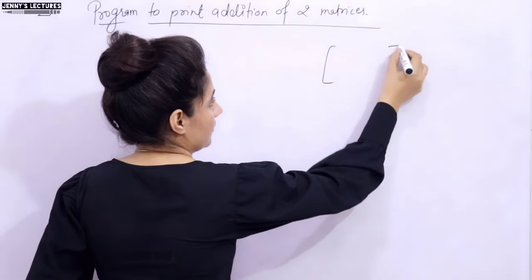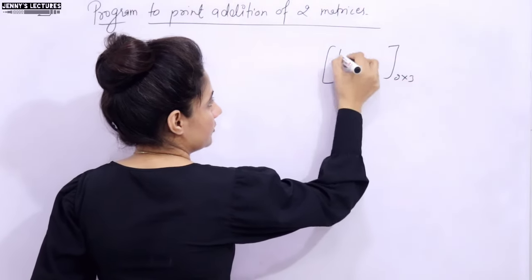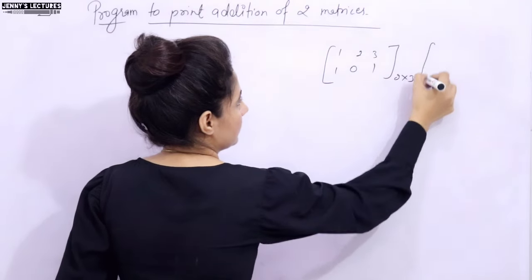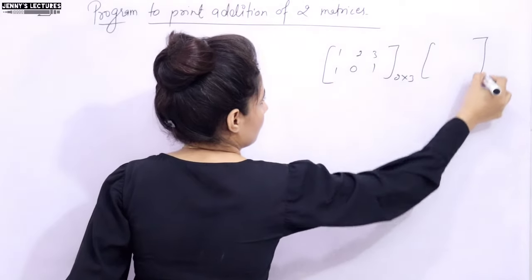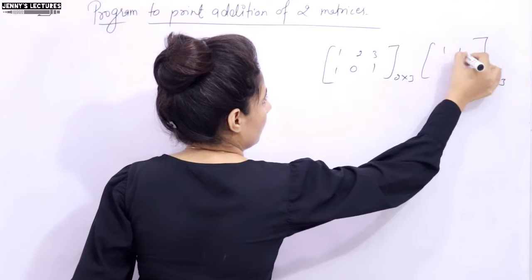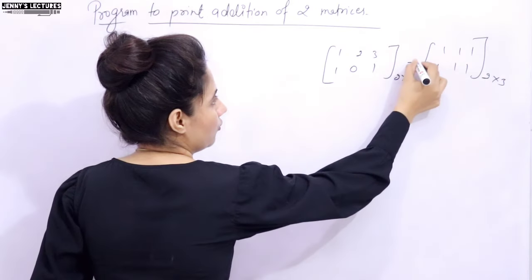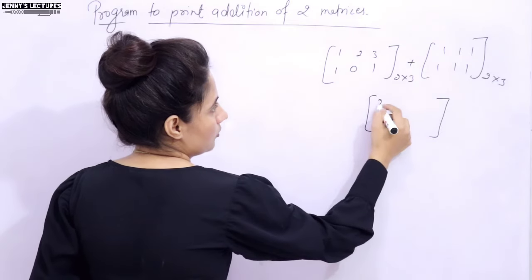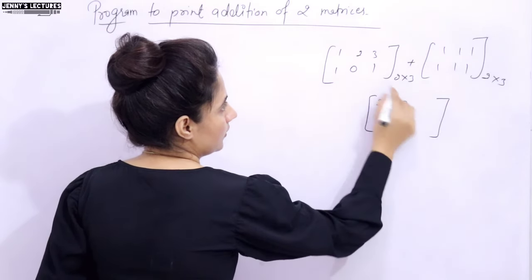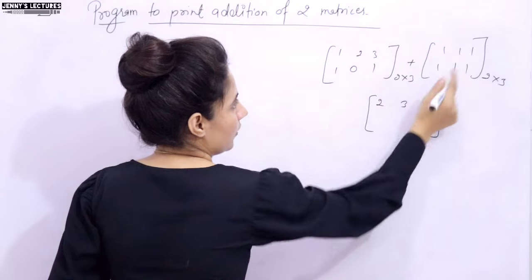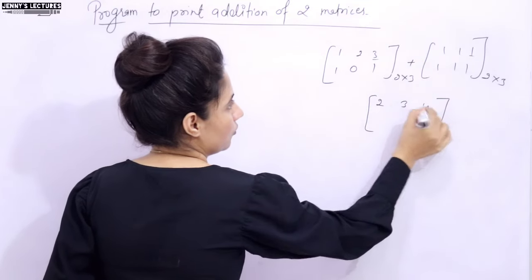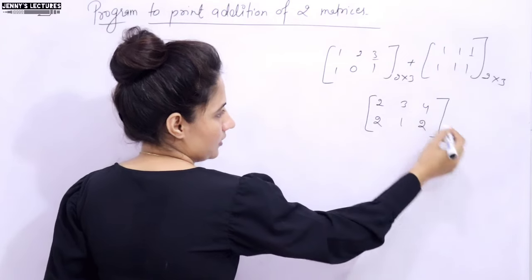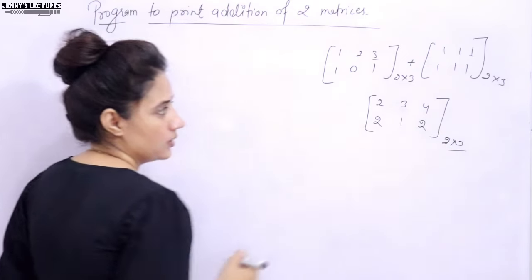Let me take a matrix. Suppose this is a 2x3 matrix: 1, 2, 3, 1, 0, 1. The second matrix is also 2x3: 1, 1, 1, 1, 1, 1. Now I want to add these matrices and the result would be: 1+1=2, 2+1=3, 3+1=4, 1+1=2, then 1 and 2. This result is also a 2x3 matrix.